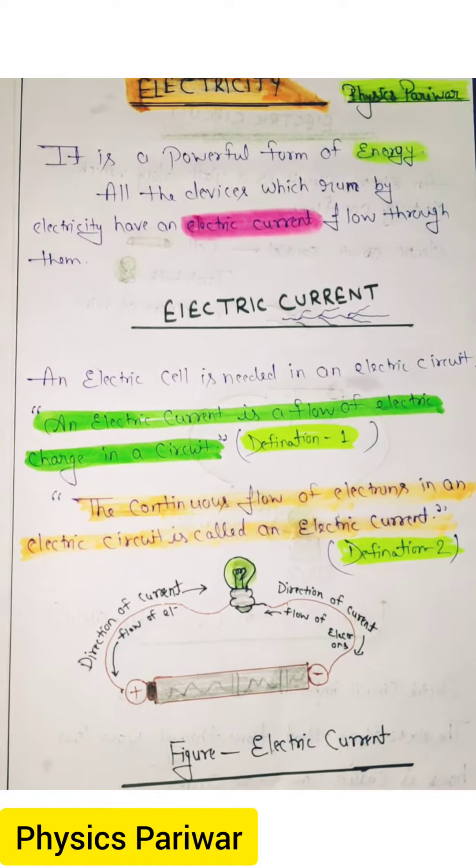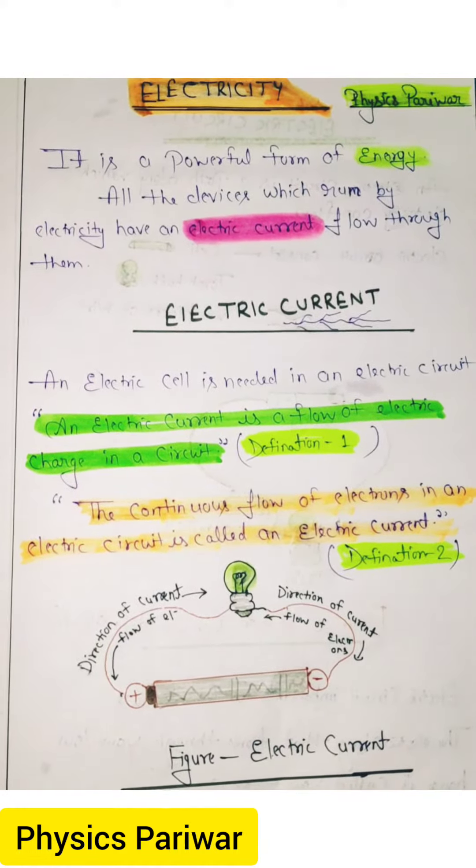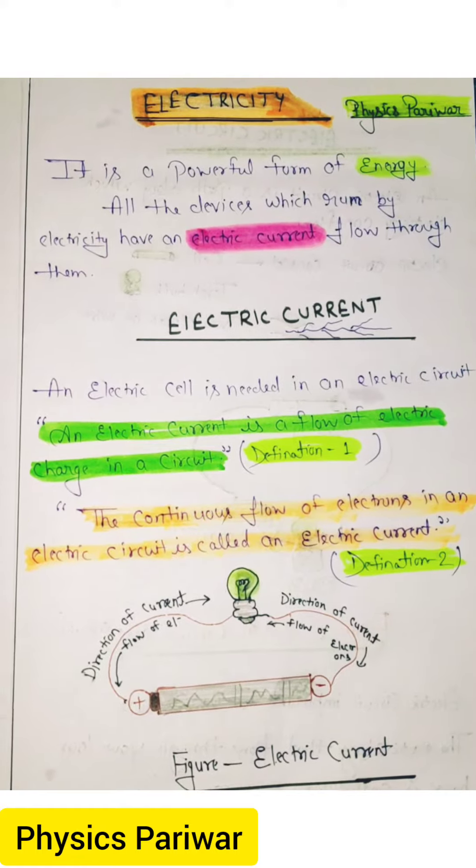Now we are going to discuss electric current. An electric current is a flow of electric charge in a circuit.